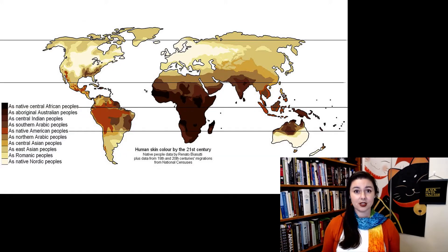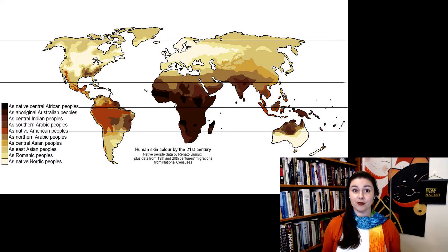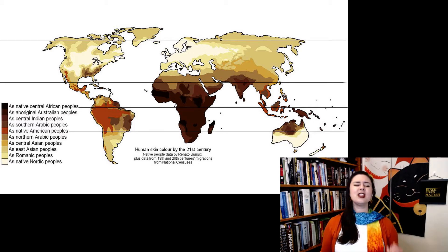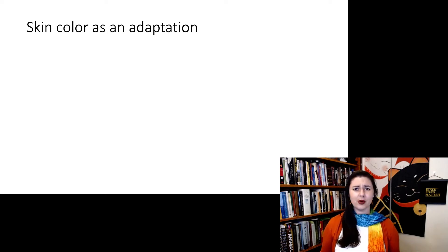Of course, the most famous cline that we see is our skin color. We see the darkest skin colors in the middle of the world and lighter skin colors the farther away you get from the equator. But really, this is just related to the amount of UV radiation. Skin color is one of the best examples of an adaptation in humans, and we should be teaching this explicitly as a way to better understand race, but also to understand adaptations and what they are.